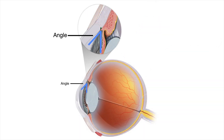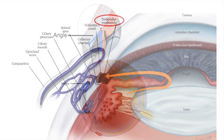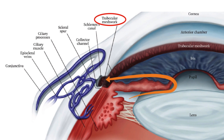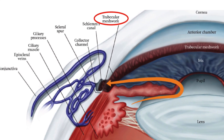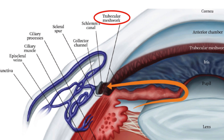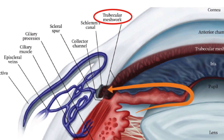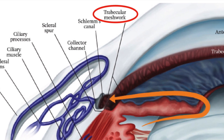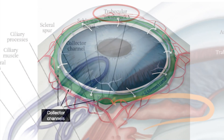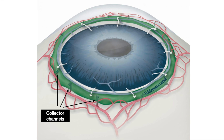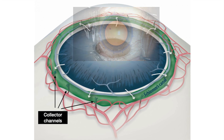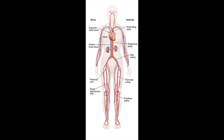The angle is a generic term for a few important structures. The first is the trabecular meshwork — a porous structure through which the fluid must pass before it enters the canal. The canal is called Schlemm's canal, named after an Austrian anatomist. From this canal, the fluid then passes through collector channels into the regular veins in the whites of our eyes, and these veins connect to larger veins which return all the blood to our heart.